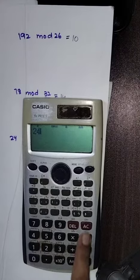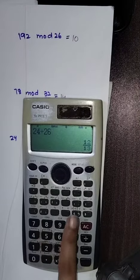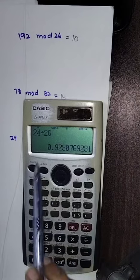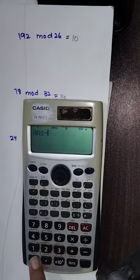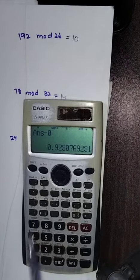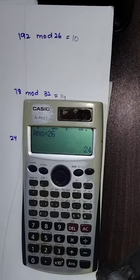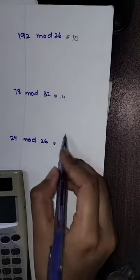24 divided by 26 is 0.92. We will subtract the value before the decimal point, which is 0, so 0.92 minus 0 is 0.92. Now multiply by 26 because that is the mod we are taking. So 24 mod 26 is 24.